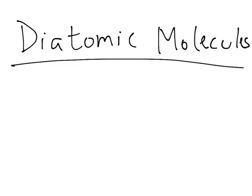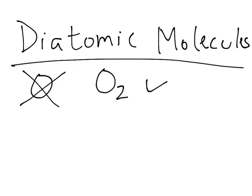There are some elements that in nature exist as diatomic — it means that there are going to be two of them. The most common one is oxygen. You don't write oxygen as just an O, except if it's in a compound. If you want to write oxygen by itself, you will actually write it as O2. That is because oxygen in its natural form has two molecules of oxygen combined together.